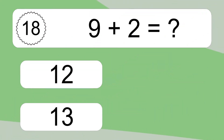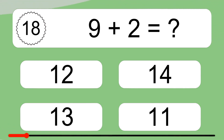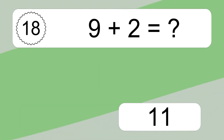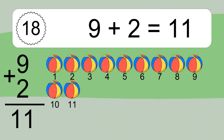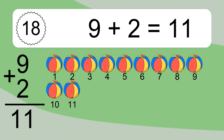9 plus 2 equals what? 9 plus 2 equals 11. Let's count it: 1, 2, 3, 4, 5, 6, 7, 8, 9, 10, 11.